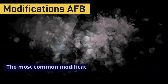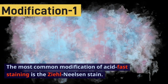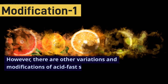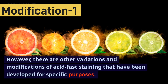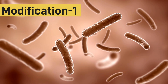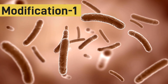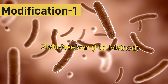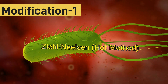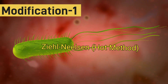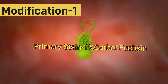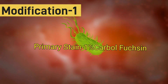That waxy component is mycolic acid. The most common modification of acid-fast staining is the Ziehl-Neelsen staining — a very popular technique. There are also other variations and modifications that have been developed for specific purposes. The Ziehl-Neelsen technique is also called the hot method because heat fixation takes place, and coagulation of the proteinaceous material in the sputum facilitates fixing of the smear.